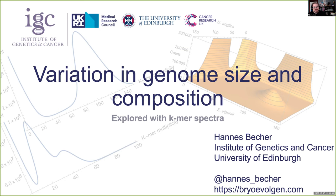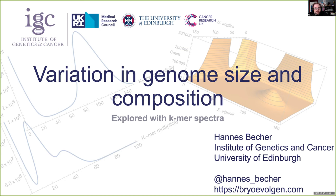Our second speaker is Hannes Becker, a population geneticist who did his PhD on hybridization in grasshoppers in the French Alps, followed by a postdoc with Alex Twyford on ecological speciation in parasitic British eyebright plants of varying ploidy levels — where he saw the light of polyploidy. Currently he works as a statistician at the University of Edinburgh and is interested in evolutionary genomics, bryophytes, and methods development. He'll tell us about variation in genome size and composition explored with k-mer spectra.